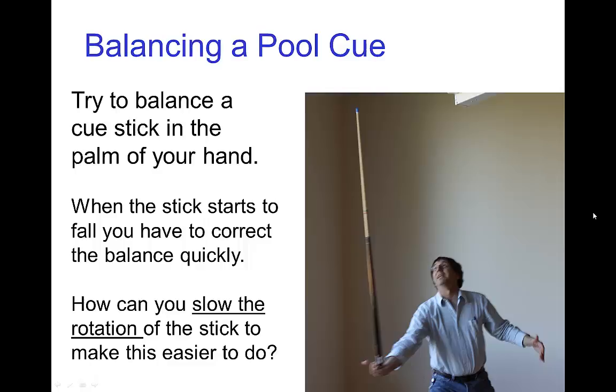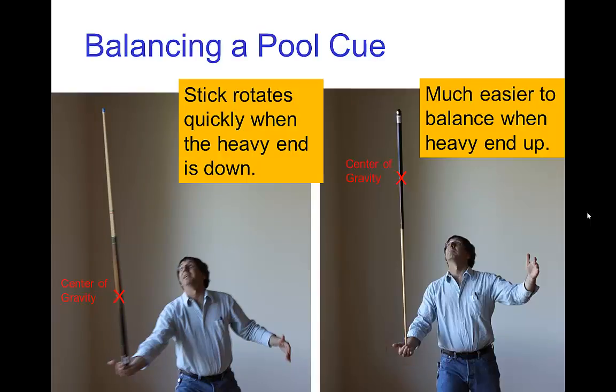But there's a trick that you can do to make the cue stick actually rotate slowly. If instead of holding the cue stick with the heavy end down, if you hold it with the heavy end as high as possible, then the cue stick actually rotates more slowly and that makes it easier to adjust your positioning and to keep it in balance. It's very noticeable effect.